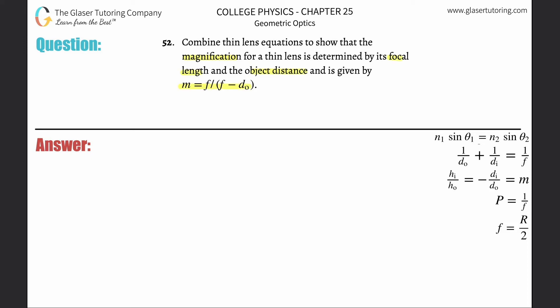Alright, so basically we have two thin lens equations. We have one where it says negative di over do, meaning the image distance divided by the object distance is going to be equal to the magnification. And then we have this one, that one divided by the object distance plus one divided by the image distance will be equal to one over the focal length.